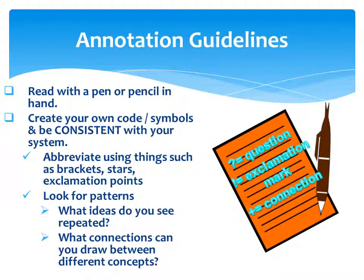When annotating a text, read with a pen or pencil in hand — this helps to maintain focus. A reader should also create a personal code system and be consistent with that system. Abbreviate using things such as brackets, stars, and exclamation points. After marking the text, review it and look for patterns.